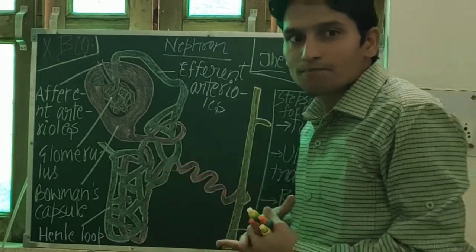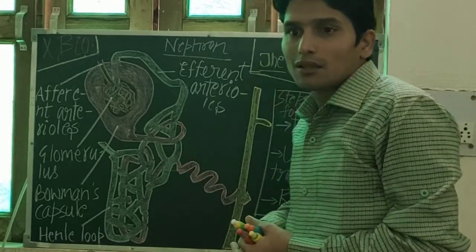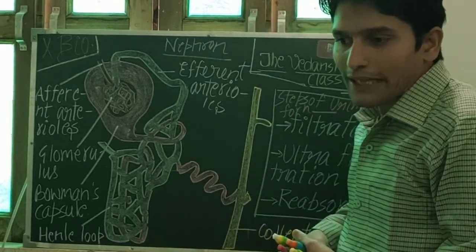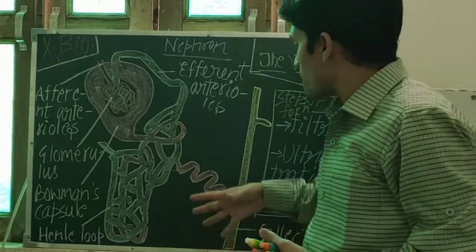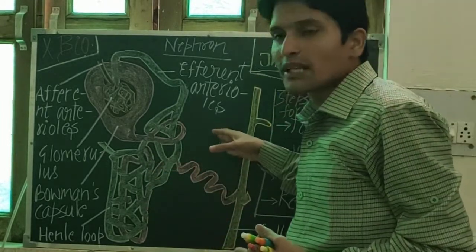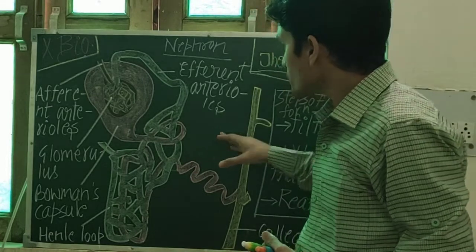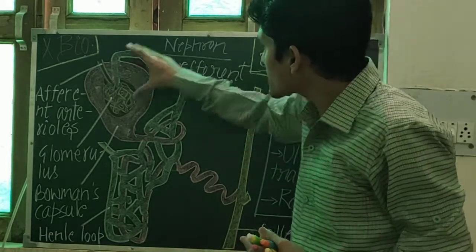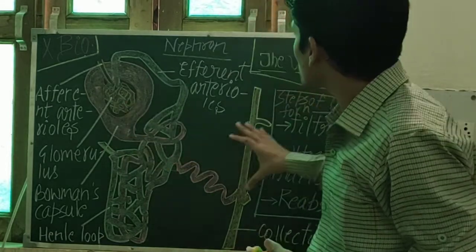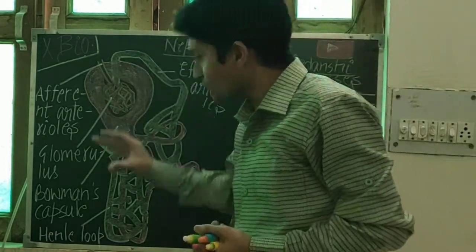The urine passes through the ureter and reaches the urinary bladder. From the urinary bladder, urine is passed through the tube that is called the urethra. So that is the structure of the nephron.